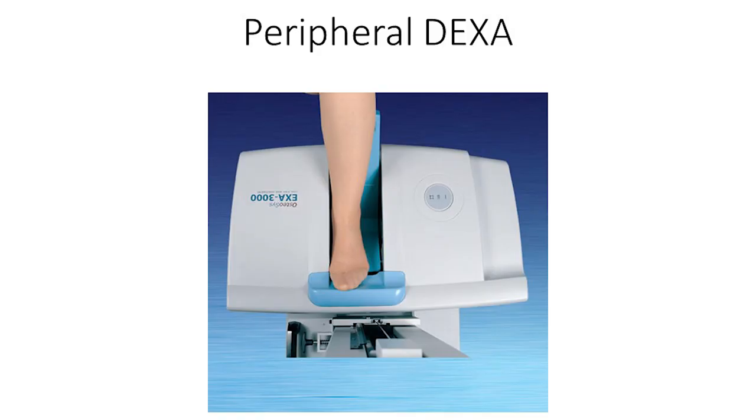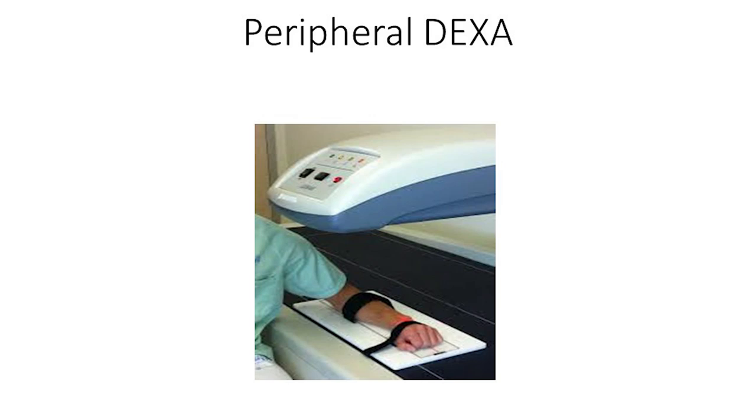Now we're going to go to the peripheral devices. The first is the peripheral DEXA. The peripheral DEXA is the same thing as the central DEXA, except that it's a much smaller machine and it involves even less radiation than the already low radiation of the central DEXA. It can measure the bone density in your arm or leg, but it's less accurate than the central DEXA and it's also less expensive. But you can't use it to diagnose osteoporosis or to monitor changes in your bone density over time, so it's fairly limited.